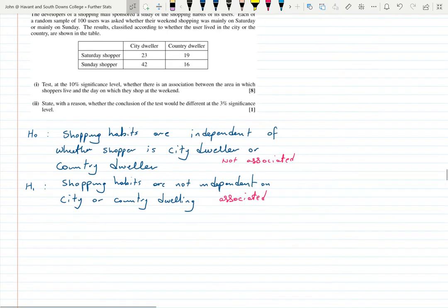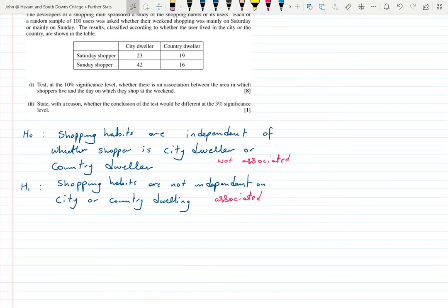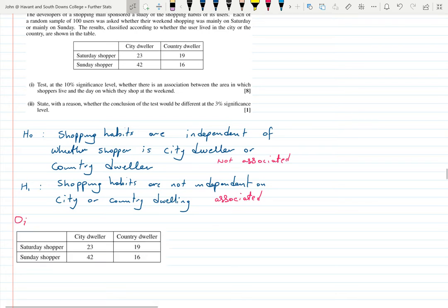Let's get on with the test. The first thing we need to do is work out our expected frequencies. I'm going to pull down that table and then we'll add the rows and columns. We've got 42 here, 58 here, and 35 and 65, and just checking that they both come to 100, rows and columns, and they do.